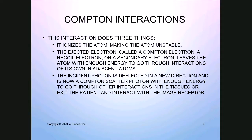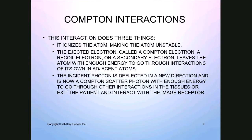This interaction does three things: it ionizes the atom making it unstable; the ejected Compton electron has enough energy to cause ionization in adjacent atoms; and the incident photon gets deflected as a Compton scattered photon. That scattered photon has enough energy to go through other interactions in tissues, or it could exit the patient and interact with the image receptor — if that happens, it's called radiation fog.